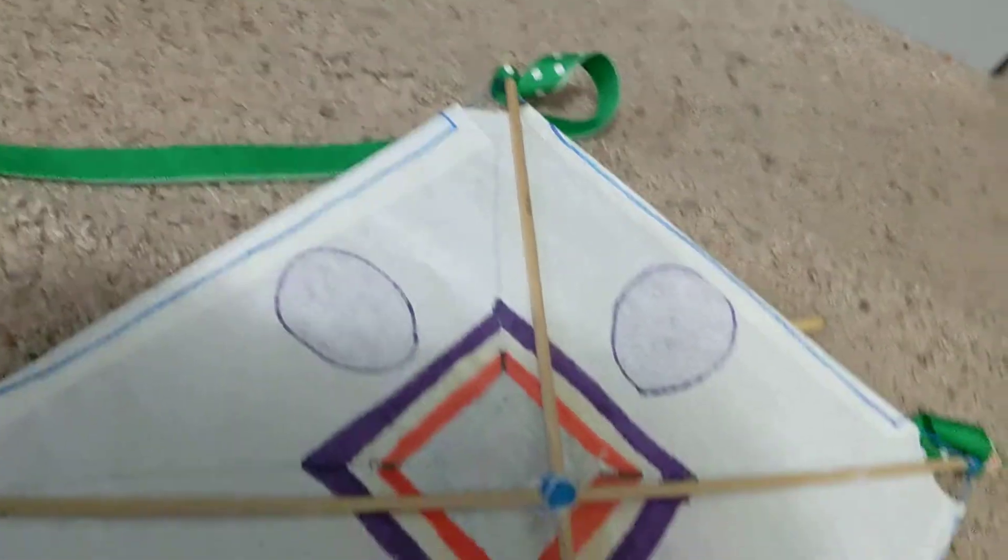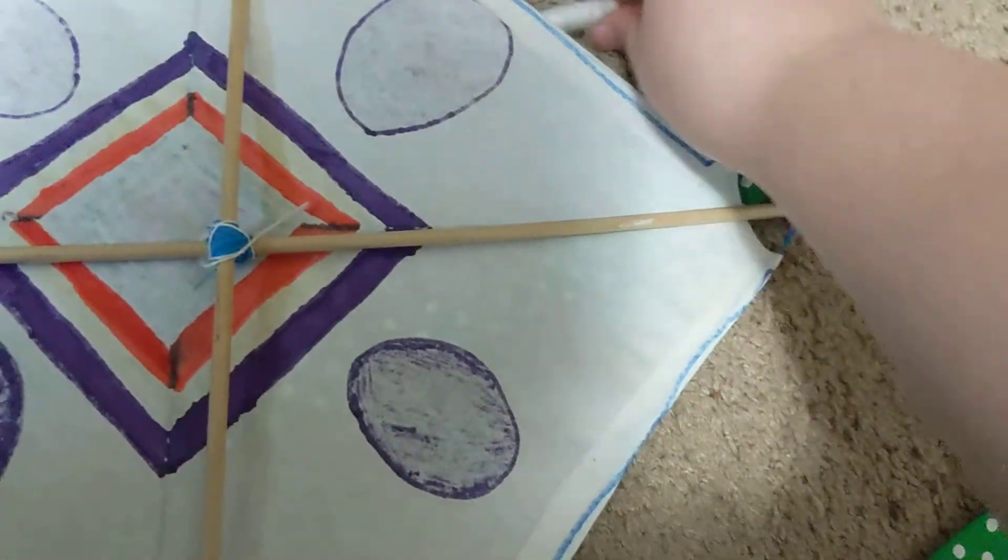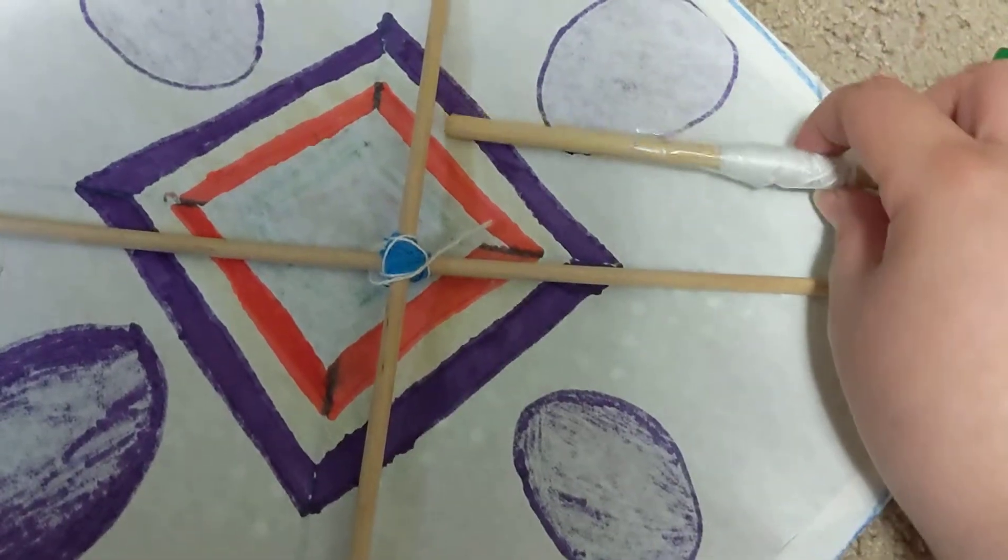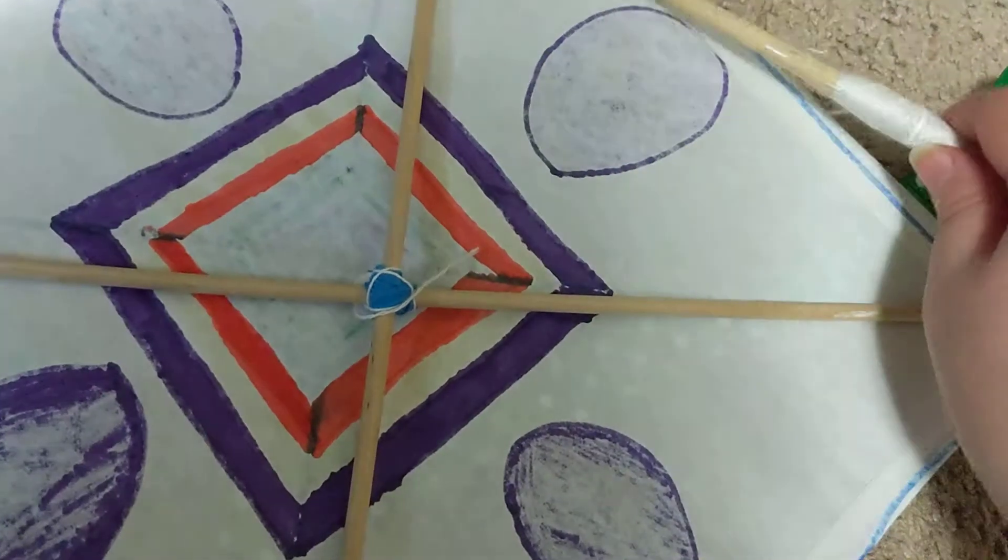And then again, just added the tails. And then the string for that. And I just took a piece of dowel for the handle.